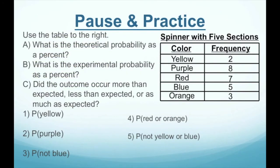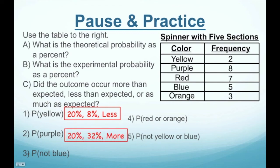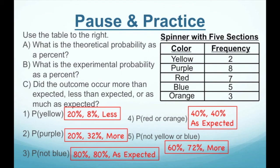Here's your pause and practice. Pause and practice, then unpause for the answers. The answers are: number one — twenty percent, eight percent, less than expected. Number two — twenty percent, thirty-two percent, more than expected. Number three — eighty percent, eighty percent, as much as expected. Number four — forty percent, forty percent, as much as expected. Number five — sixty percent, seventy-two percent, more than expected.